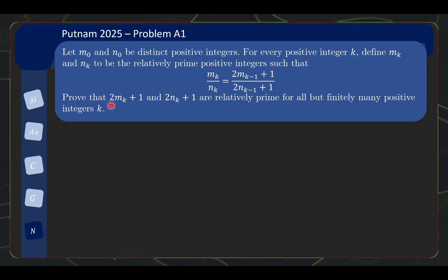You are supposed to prove that 2mₖ + 1 and 2nₖ + 1 are relatively prime for all but finitely many positive integers k. In other words, when forming this fraction, you are already going to get numerator and denominator relatively prime to each other, except for finitely many times. So let's take a look at an example first to better understand the problem.